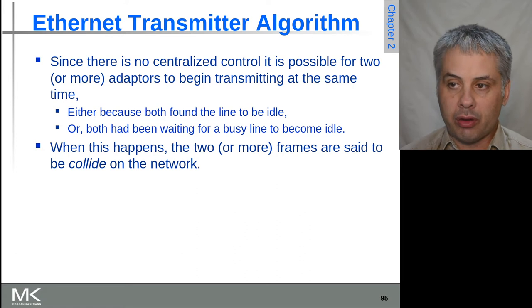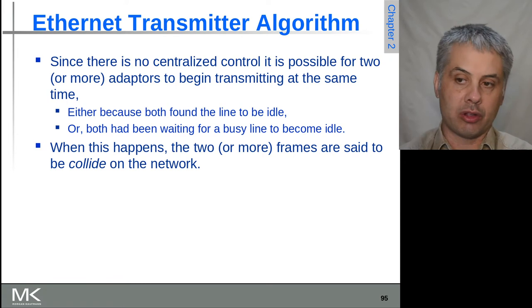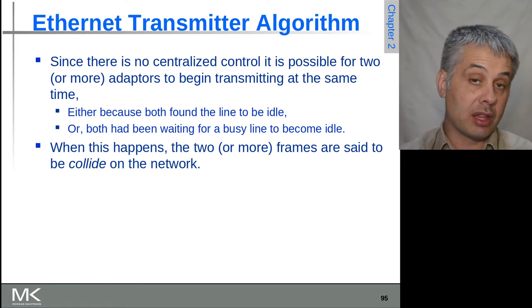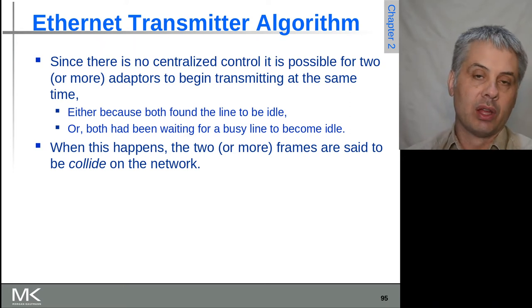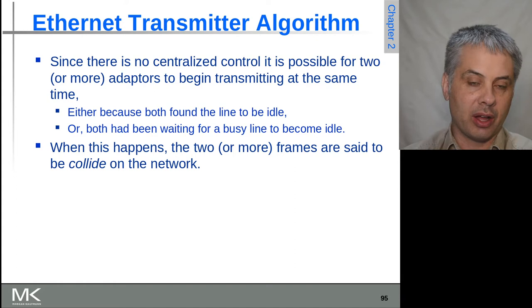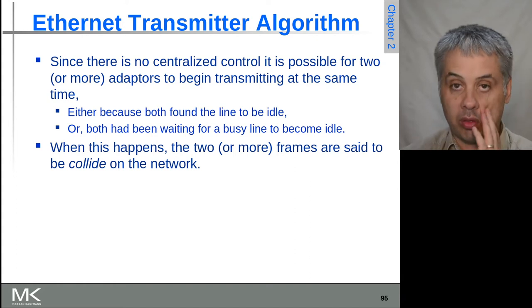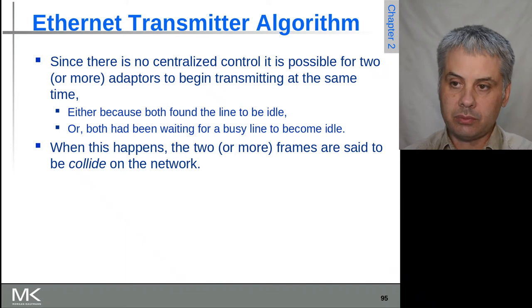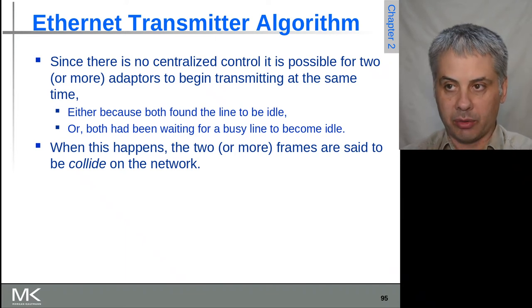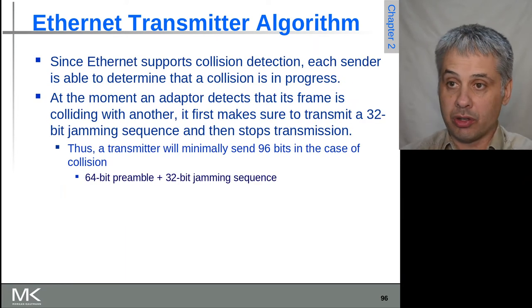Because there's no centralized control, it's possible for multiple transmitters to try sending at the same time. If that happens, we say that their transmissions collide on the network, and that will cause neither of the frames to be able to be received by any device because it's all going to be jumbled up together. So now we need to have a mechanism to deal with this situation.